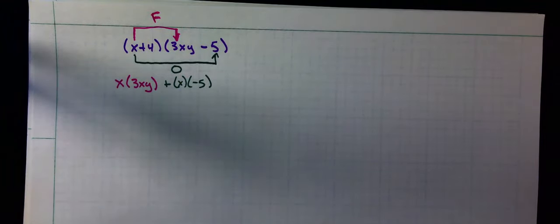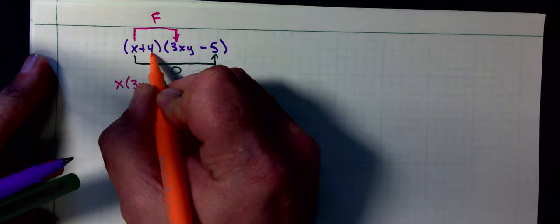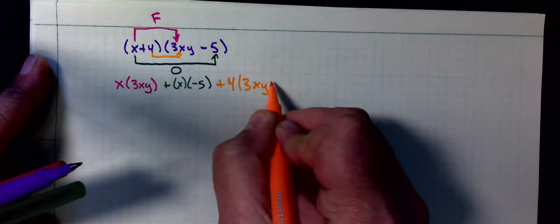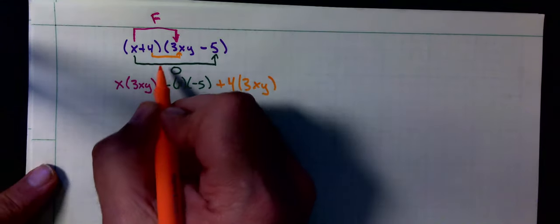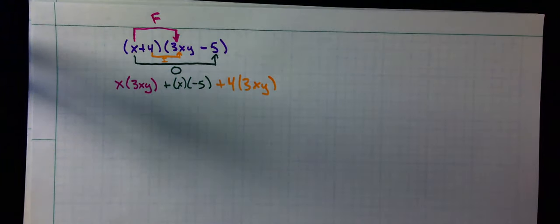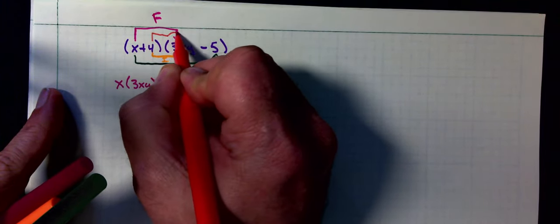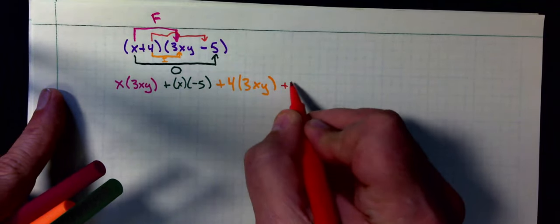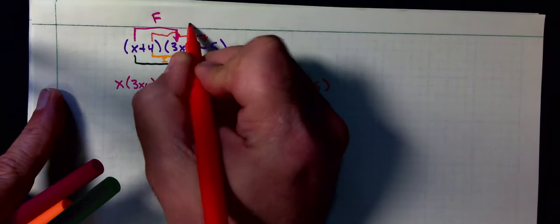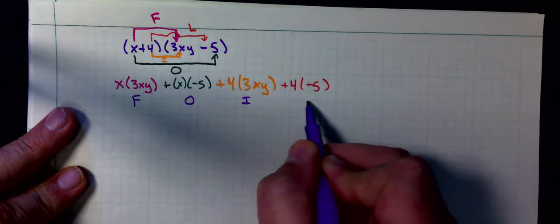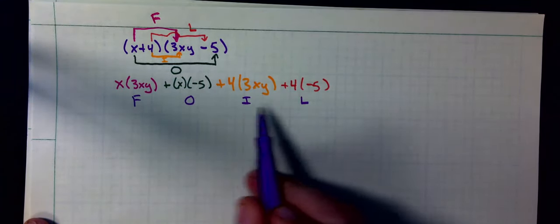That's going to be x times negative 5. I'm going to label that as an O because I'm multiplying the outer terms. Next I would multiply the 4 times the 3xy. I'm going to label that as an I for inner. Then the last two pieces that I multiply together is the 4 times the negative 5. I'm going to label that with an L. So the four letters that I ended up using were F, O, I, L: first, outer, inner, last.